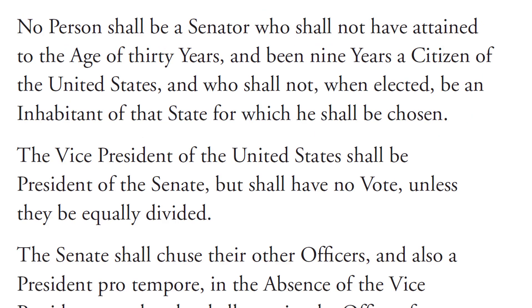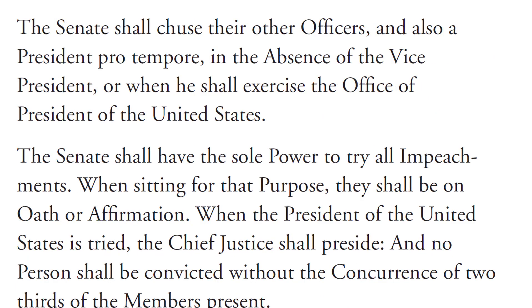No person shall be a senator who shall not have attained to the age of thirty years, and been nine years a citizen of the United States, and who shall not, when elected, be an inhabitant of that state for which he shall be chosen. The Vice President of the United States shall be President of the Senate, but shall have no vote unless they be equally divided. The Senate shall choose their other officers, and also a President pro tempore, in the absence of the Vice President, or when he shall exercise the office of President of the United States.